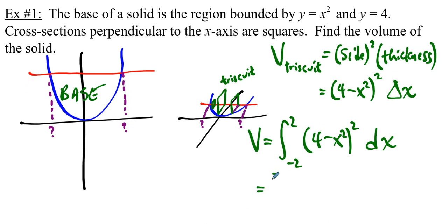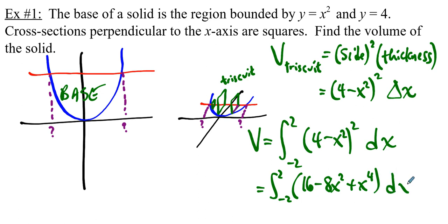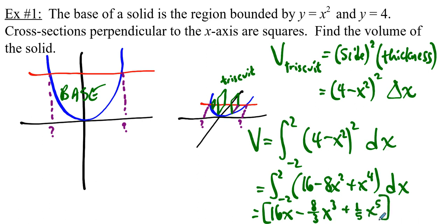So we have the integral from negative 2 to 2 of (4 minus x squared) squared dx. We expand and take an antiderivative term by term, substitute the limits, and subtract. Doing that gives the result 512 over 15.